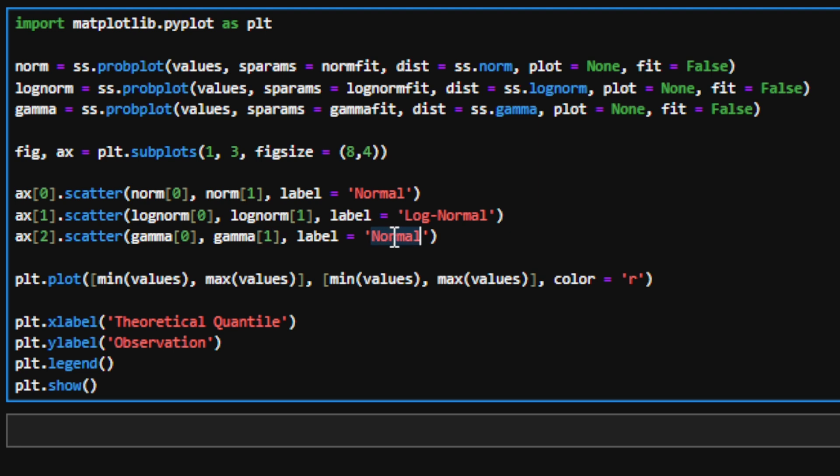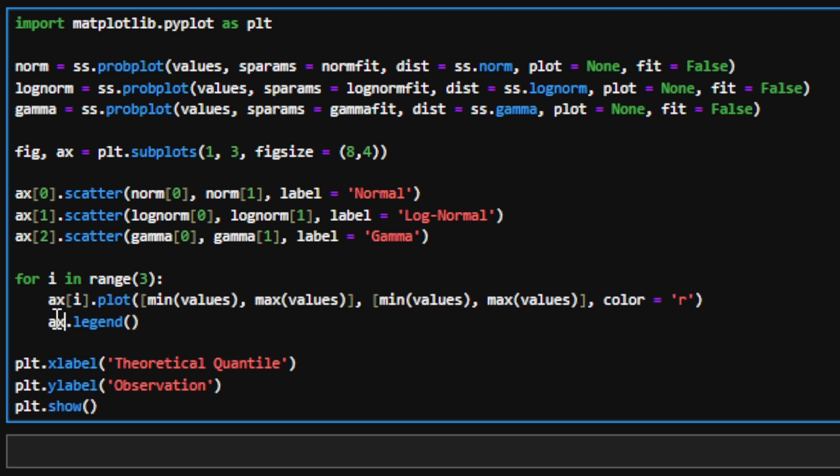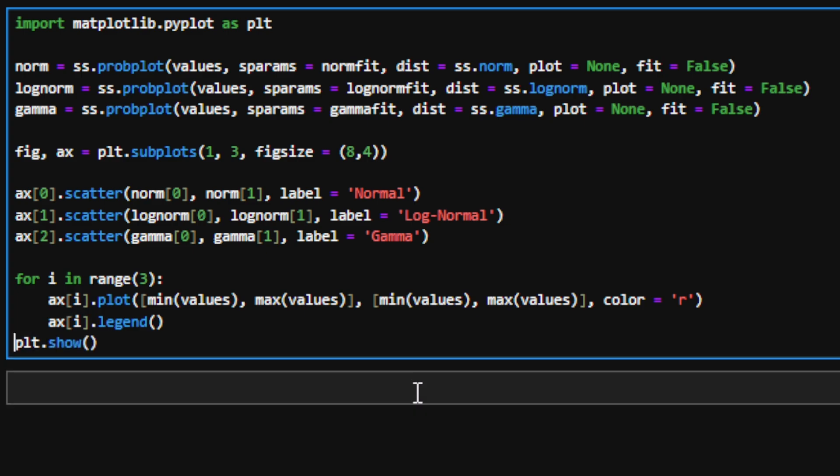And once I've done that, I'm just going to write a quick for loop. For each subplot, I want to show both my 45-degree red line and legend title. And let's now show our plot. And there we have our plots for all three distributions.